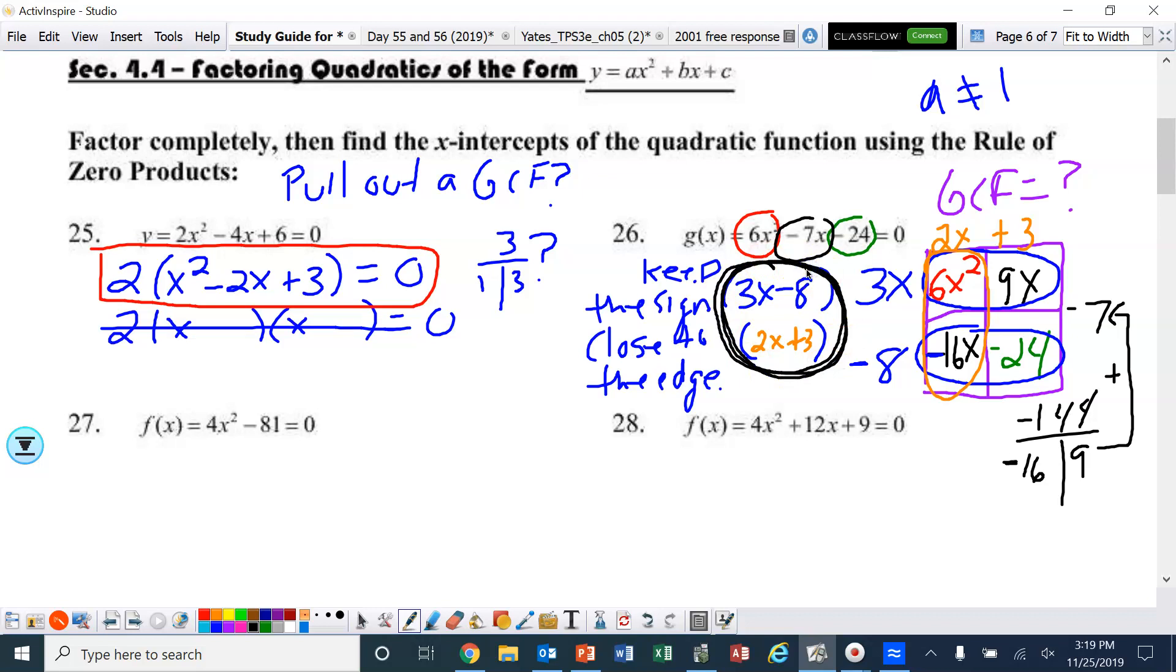So my final answer here for factoring is 3x minus 8 times 2x plus 3. Now you can go and double check it. Go backwards. 3x times 2x is 6x squared. Yep. 3x times 3 is 9x. Yep. 2x times the negative 8 is negative 16x. Yep. And negative 8 times 3 is negative 24. Rewatch that again if you didn't get that. Okay. So I like the box method a lot, but if you can solve it any other way, that's great. Go ahead and do that.